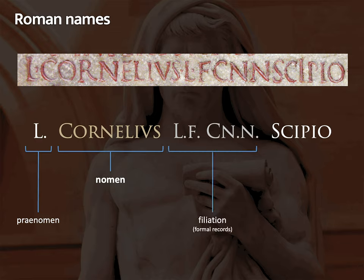In a formal inscription like this, you also see the filiation. Here we have Lucius filius, Gaii nepos — meaning Lucius Cornelius, son of Lucius, grandson of Gaius. Your formal name further emphasizes your lineage, your family, the people that you are collectively gaining honor for.